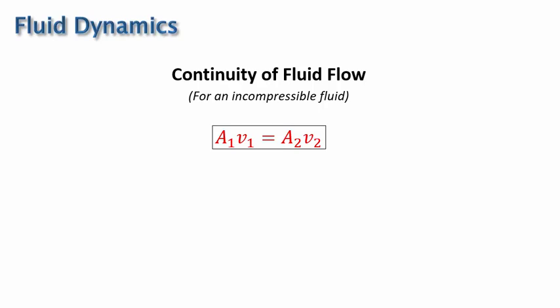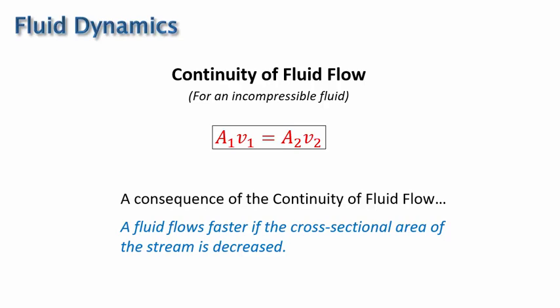Notice that while I describe this principle using a pipe, it actually refers to any continuous stream that doesn't split into multiple branches. An important consequence of the continuity of fluid flow is that the fluid flows faster when the cross-sectional area is smaller. This is what happens when you put your thumb over the end of the hose, covering part of the opening. The area is reduced, so the water sprays out with a greater velocity.